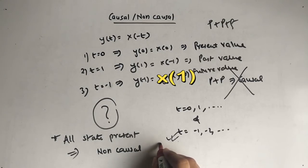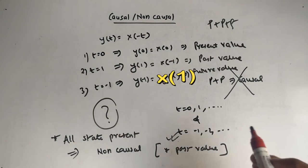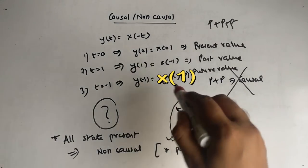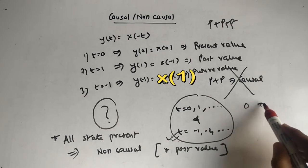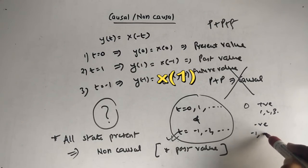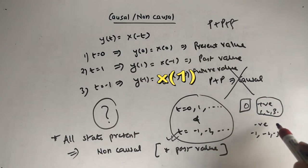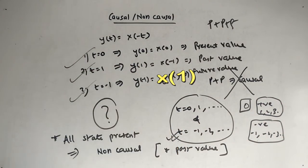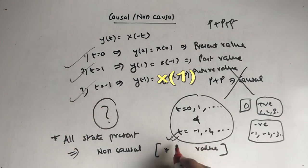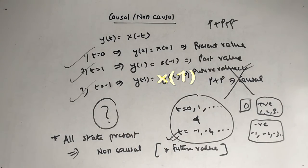Remember this: wherever you see a future value appearing by plugging in any values — always plug in three categories: zero, positive values like 1, 2, 3, and negative values like minus 1, minus 2, minus 3 — whenever you see that the output depends on a future value, that means it is a non-causal system.